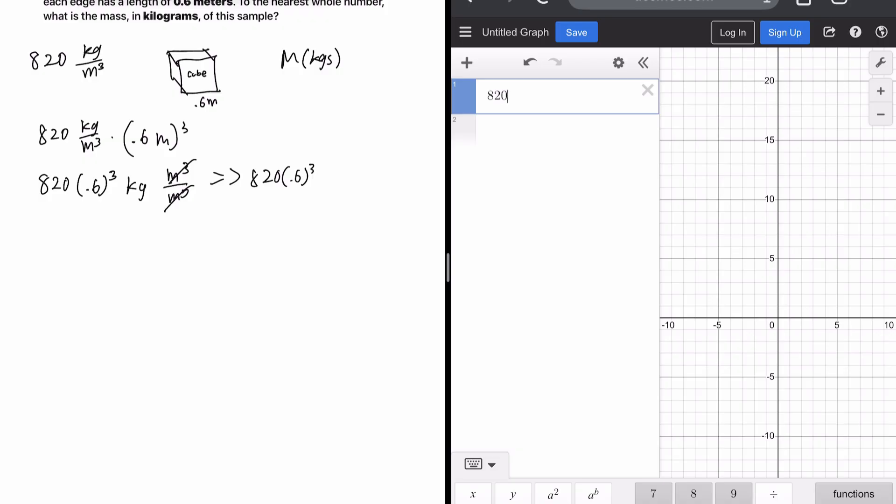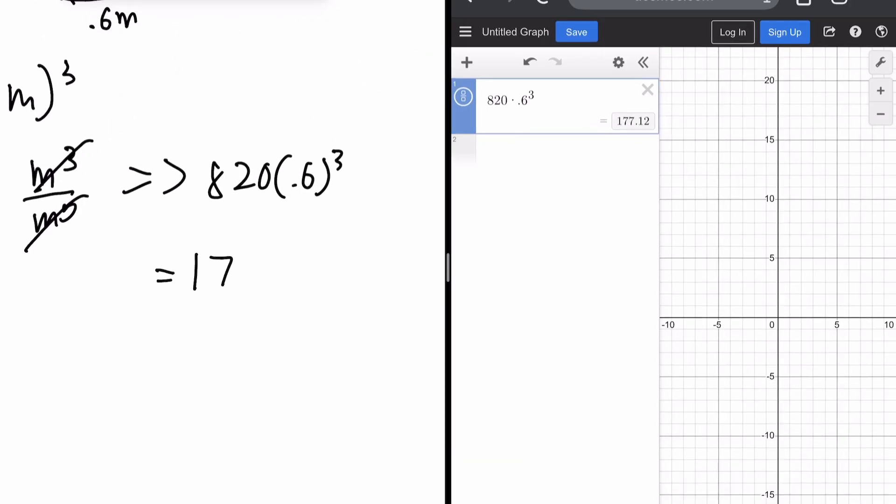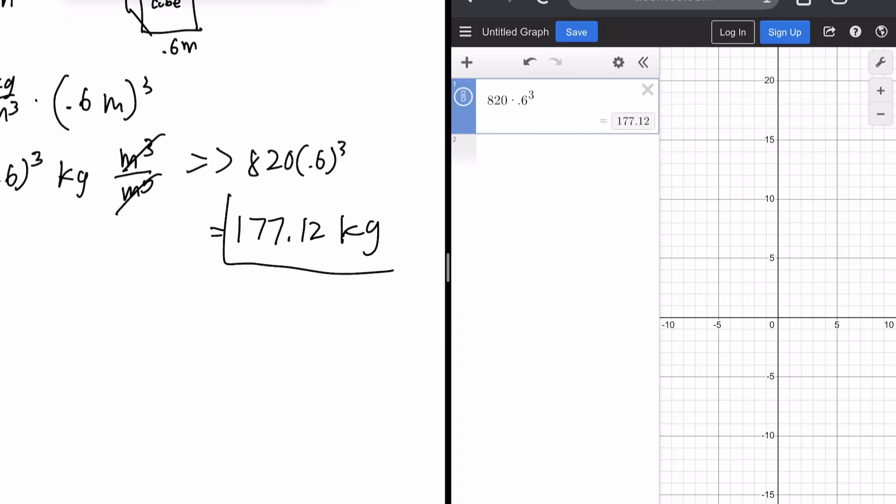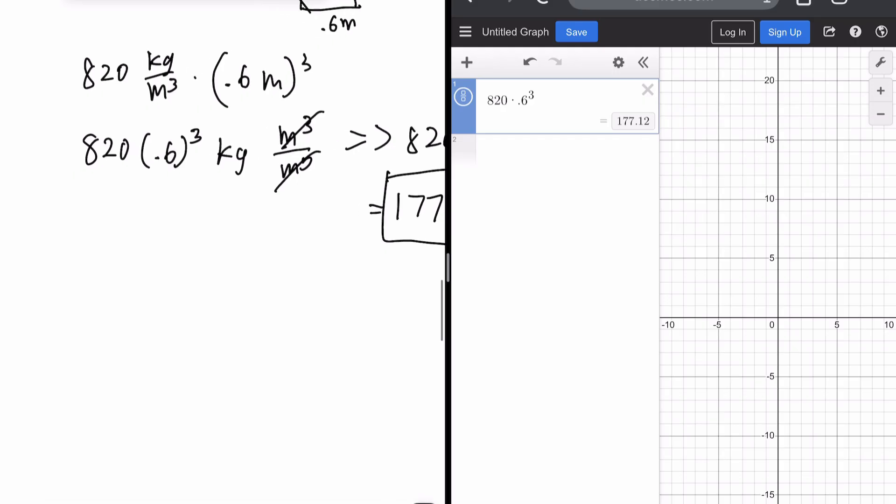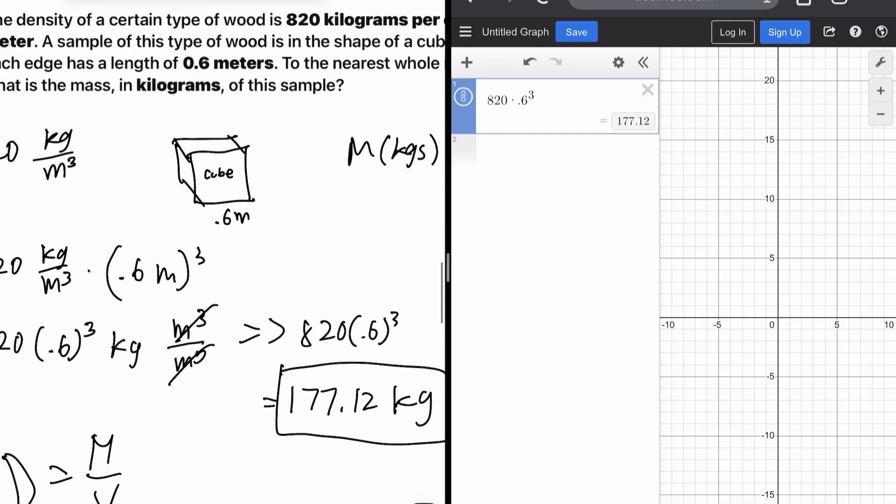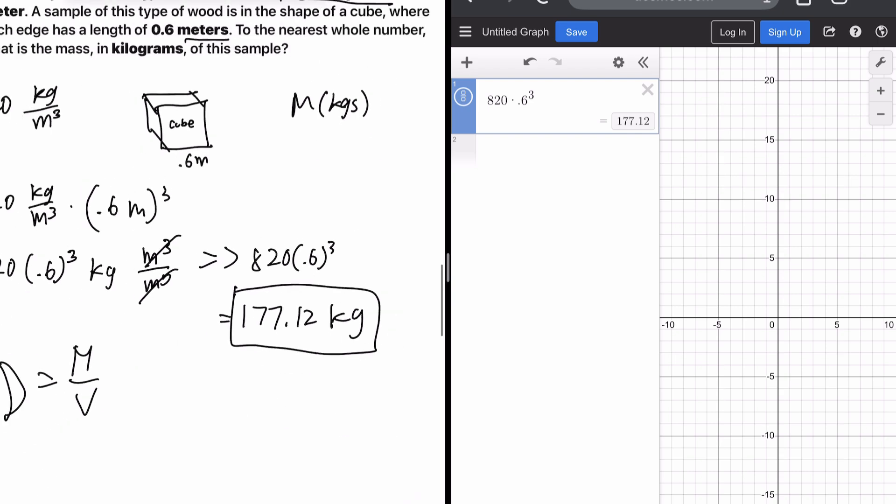So let's figure out what that is. 820 times 0.6 cubed. Which is 177.12 kilograms. This is our mass. We didn't even need the density formula, mass over volume. Because just based off of the units, we're able to find the right answer.